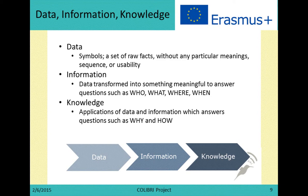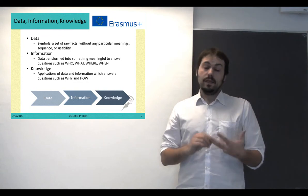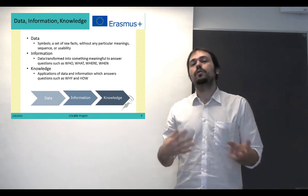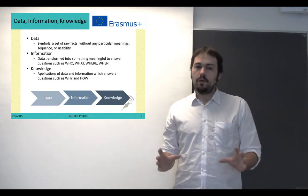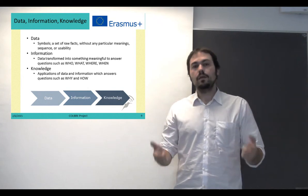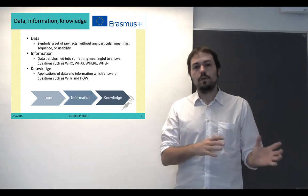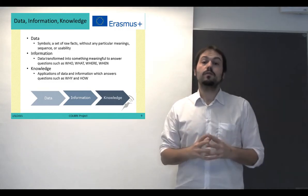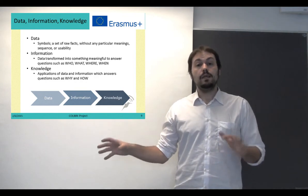Now let's see what the difference between data, information, and knowledge is. Data are symbols — raw facts that don't really have any meaning. They could be numbers or words, but we don't really know how to use them. If we transform that data into information, we start to understand what it means, and we get meaningful answers to questions like who, what, where, and when. Once we have information, we can move one step higher to knowledge — how we can apply that information to obtain some benefit, and to answer questions such as why and how. Our goal with GIS is to get that raw data into knowledge.